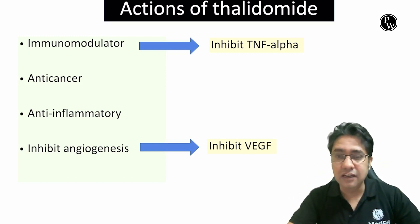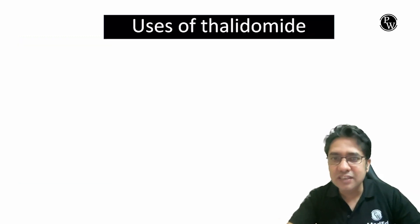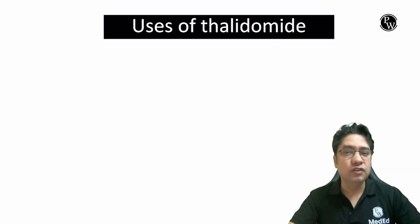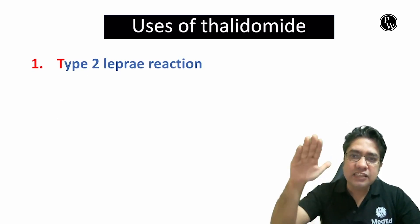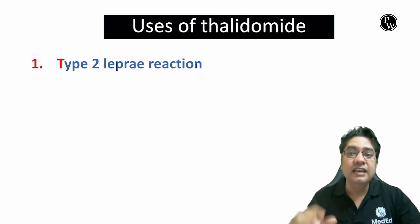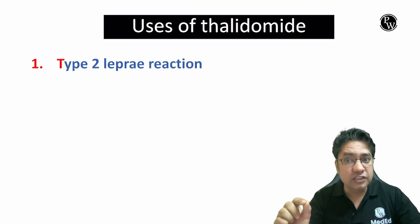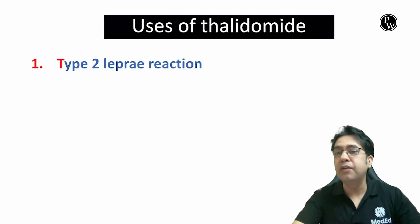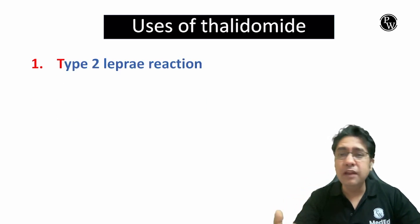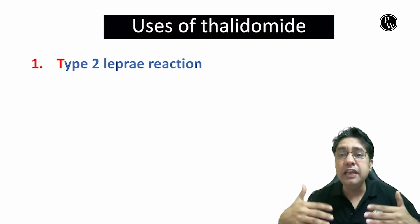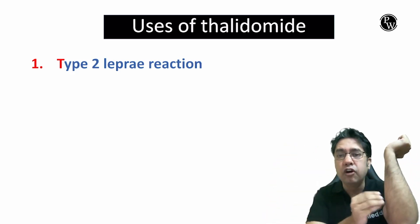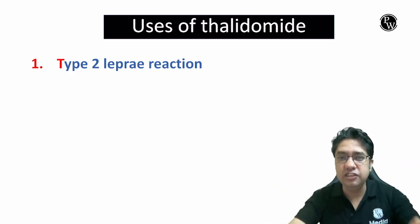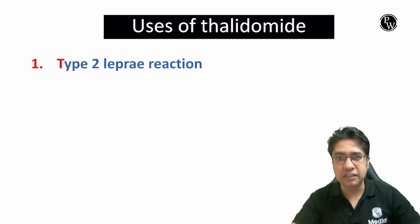Keeping these actions in mind, let's look at the uses of Thalidomide. The first use — as it is an immunosuppressive drug — it is used in type 2 lepra reaction. In type 2 lepra reaction, immunity becomes stimulated, which leads to formation of new skin lesions seen in leprosy.